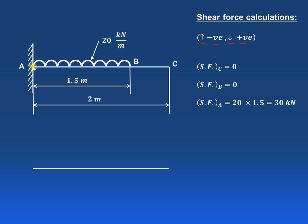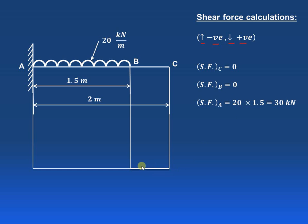Now we find shear force at point A by considering all forces acting on the right-hand side of A. There is only the UDL of 20 kilonewton per meter acting for 1.5 meters, so 20 × 1.5 = 30 kilonewton, acting downward. Since downward forces are positive, shear force at A is +30 kN. Drawing the diagram: shear force at C is zero, at B is zero, and at A is 30 kilonewton — this is the shear force diagram.